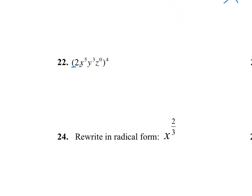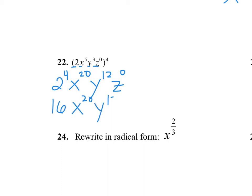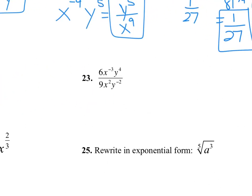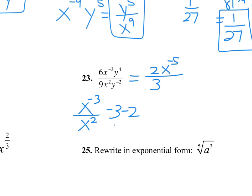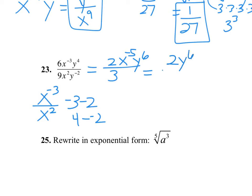Number 22: there are four different things, all raised to the fourth power. We get 2 to the 4th, x to the 20th, y to the 12th, and z to the 0. 2 to the 4th is 16, x to the 20th stays the same, z to the 0 is just 1 so we don't need it. Number 23: divide — 6 divided by 9 reduces to 2/3. Subtract exponents for powers over powers: negative 3 minus 2 gives x to the negative 5th. For y's: 4 minus negative 2 gives y to the 6th. Fix the negative exponent — it's 2y to the 6th over 3x to the 5th.